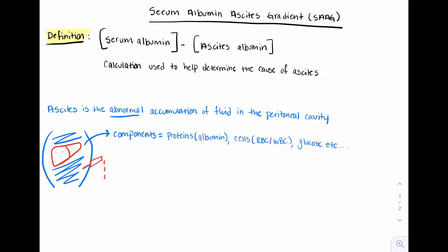In order to figure out what is causing the abnormal accumulation of fluid, we do a procedure called a paracentesis. This enables us to obtain a sample of fluid and measure the albumin. We can then compare the level of albumin in the peritoneal fluid to the level of albumin in the blood. And this is what makes up the serum ascites albumin gradient.